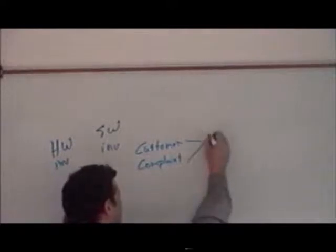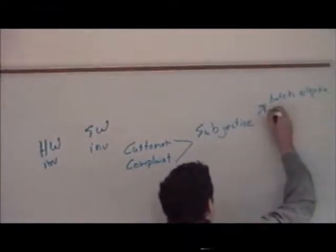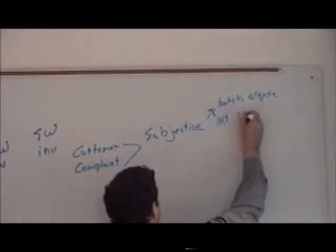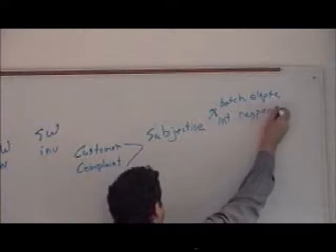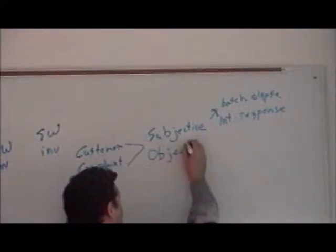In that customer complaint, I've got to ask them subjectively what the issue is. Common complaints are batch elapsed time or interactive response time. When they call and say 'system slow,' you've got to get past that and ask what does that mean objectively — what can I measure? We're trying to get from subjective to objective measurements.